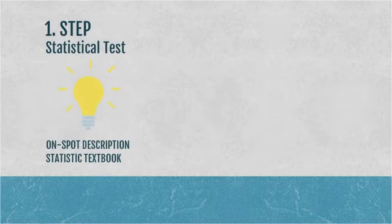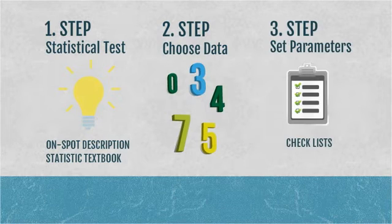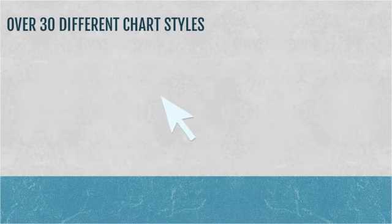In the first step, choose the statistical test and the on-spot description that supports your selection. In the second step, you choose the data you want to analyze. MaxStat includes checklists to set required parameters of statistical tests. All steps are done in a single dialog window.